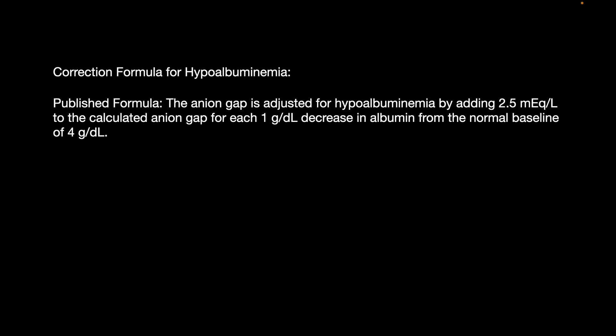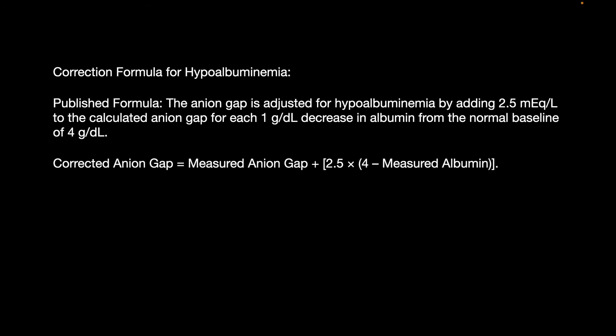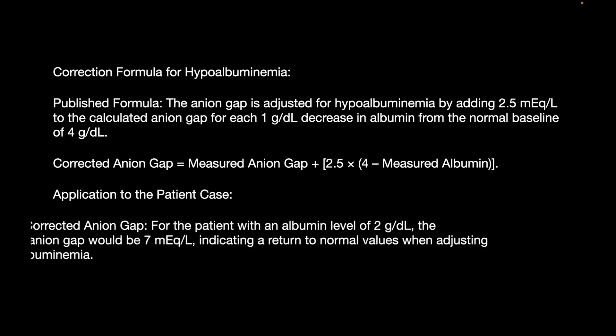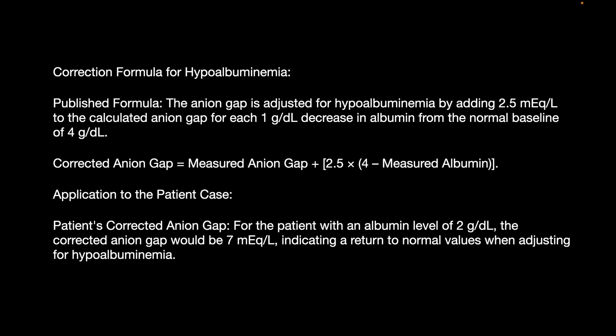You must correct for hypoalbuminemia. The anion gap is adjusted by adding 2.5 mEq/L for every 1 g/dL decrease in albumin from the normal baseline of 4. The corrected anion gap equals measured anion gap plus 2.5 times (4 minus measured albumin). For a patient with albumin of 2, the corrected anion gap becomes 7, indicating a return to normal when adjusted for hypoalbuminemia.